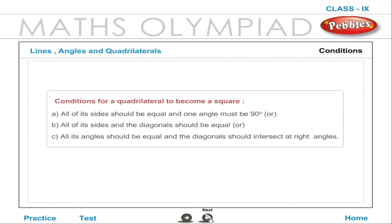Conditions for a quadrilateral to become a square: All sides should be equal and one angle must be 90 degrees; or all sides and the diagonals should be equal; or all angles should be equal and the diagonals should intersect at right angles.